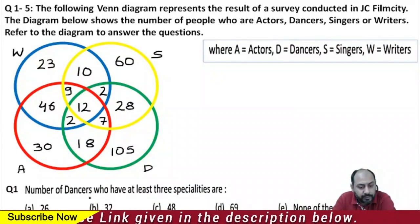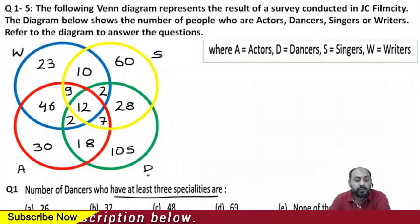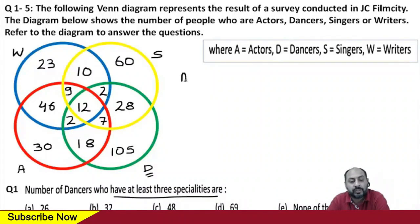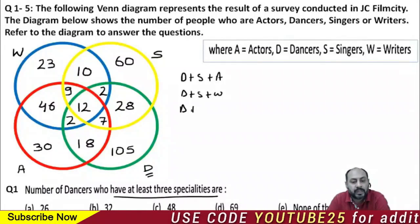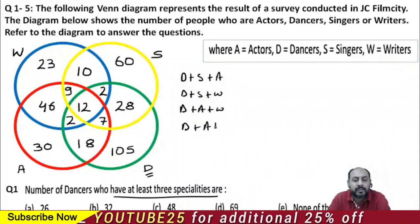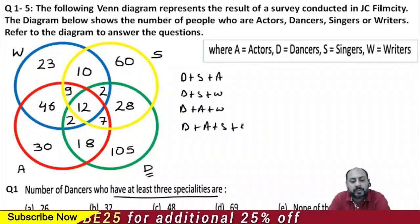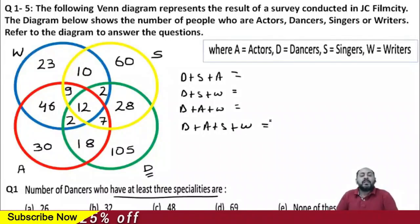The first question asks: what is the number of dancers who have at least three specialties? So you have to find those dancers who have at least three specialties. The possibilities are: dancers plus singers plus actors, dancers plus singers plus writers, dancers plus actors plus writers, or dancers plus actors plus singers plus writers — four possibilities in total.